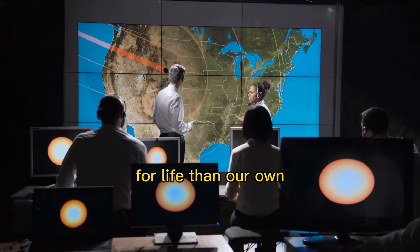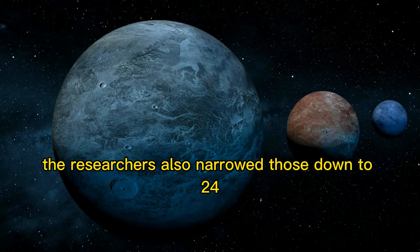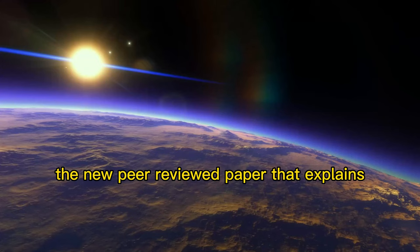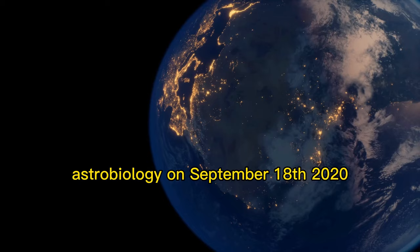Out of the over 4,000 currently known exoplanets, the researchers narrowed those down to 24 candidate superhabitable planets that could be even better suited to life than Earth. The new peer-reviewed paper was published in the journal Astrobiology on September 18, 2020.